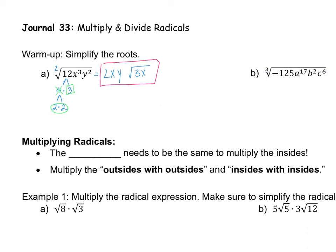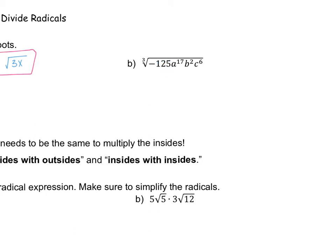This next one is a cube root of negative 125. Since 25 times 5 gives 125, and 25 decomposes into 5s, we have three 5s — a triplet. For a cube root you're looking for triples, so a 5 comes out. But this was negative 125, and since we have an odd root with a negative, a negative value comes out. Negative 5 times negative 5 is positive 25, and positive 25 times negative 5 is negative 125, confirming the answer is negative 5.